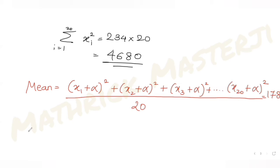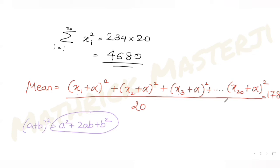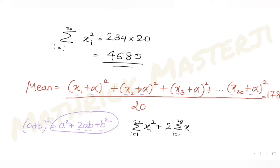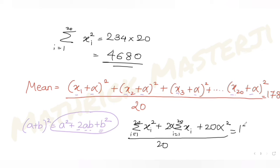Expanding using (a+b)² = a² + 2ab + b², we get: (x1² + x2² + ... + x20²) + 2α(x1 + x2 + ... + x20) + (α² added 20 times), all divided by 20, equals 178. This simplifies to: Σxi² + 2α·Σxi + 20α², divided by 20, equals 178.